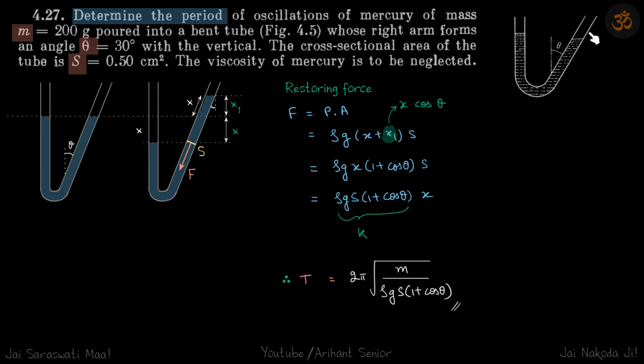We have a bent tube and this side of the tube is at an angle theta. Some liquid is filled in that and we need to determine the period of oscillations. If mass of the liquid is given, theta is given, and cross-sectional area of the tube is also given.